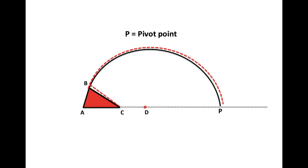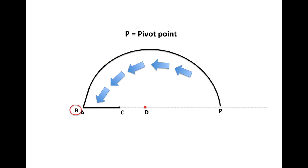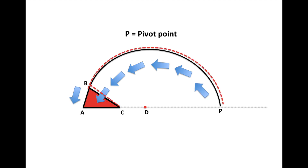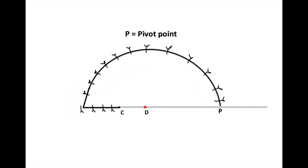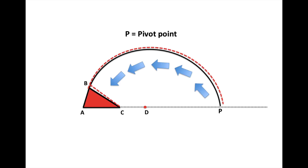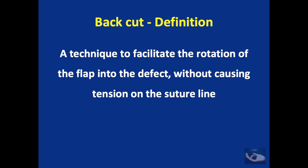The actual incision to be made is shown as a red dotted line. Once the flap is raised, it is given a rotatory movement so that side CB reaches side CA and point B comes to point A — this will be the resultant suture line. However, all planned flaps may not move so easily to cover the defect because of the fixity of the flap at pivot point P. In such situations, we need to perform a back cut, which moves the pivot point toward the defect.